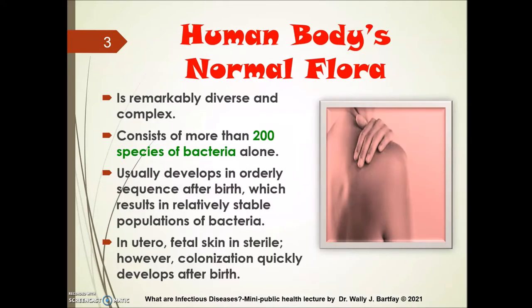The human body's normal flora is remarkably diverse and complex in nature, consisting of more than 200 species of bacteria alone living on our skin. It usually develops in an orderly sequence after birth, resulting in a relatively stable population of bacteria. It is interesting to note that in utero fetal skin is sterile; however, colonization quickly develops after birth.